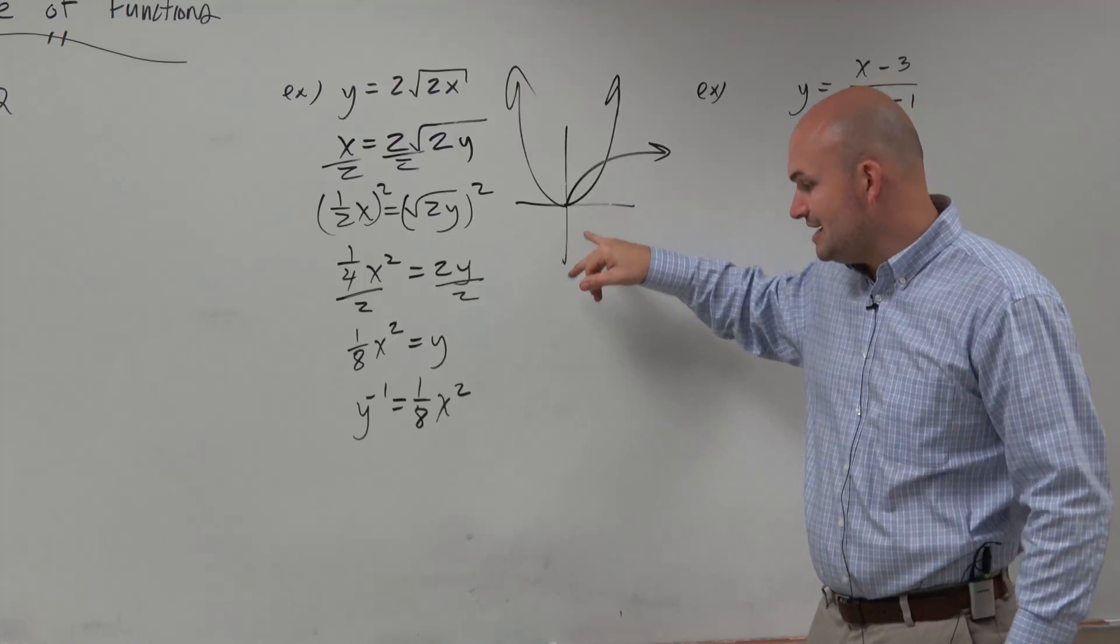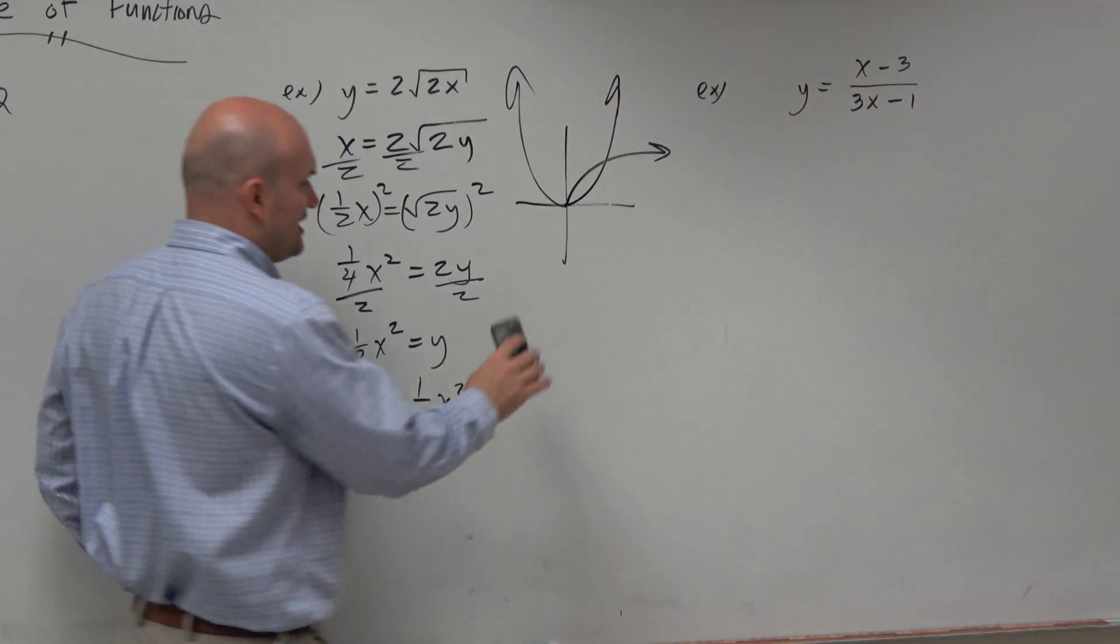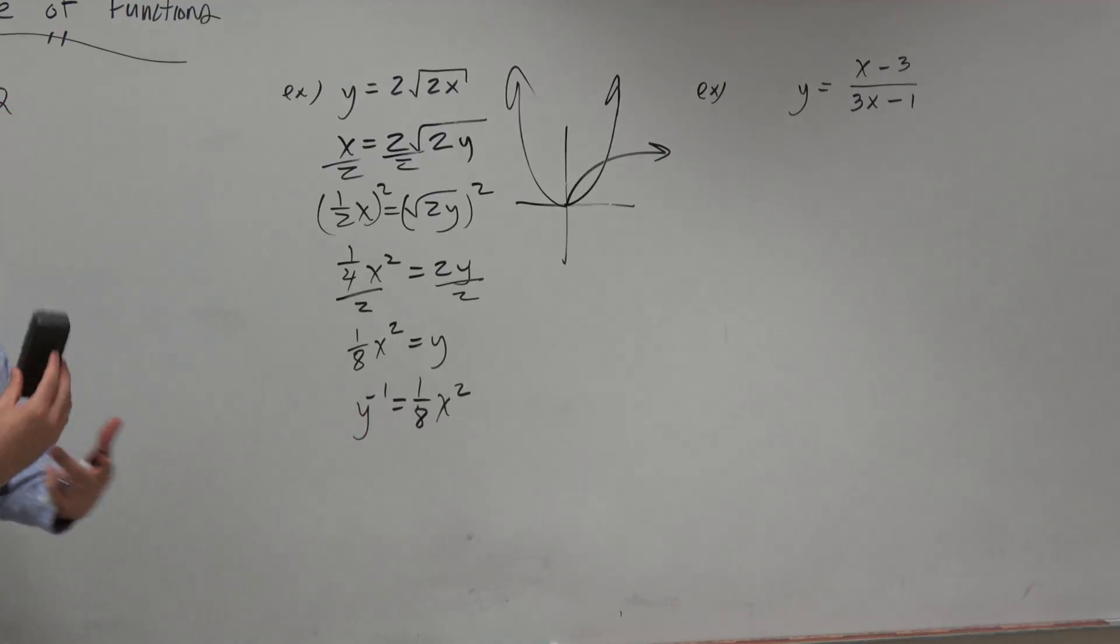So what we have to do is we realize, oh well, we don't want to include the negative values here. Because by squaring it, when you square something, you're taking into account positive and negative values.